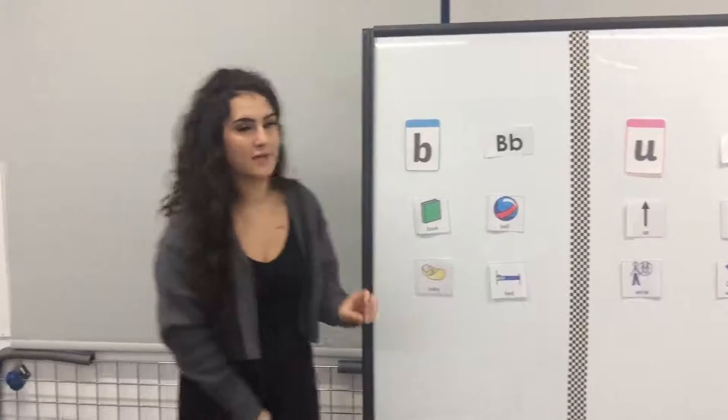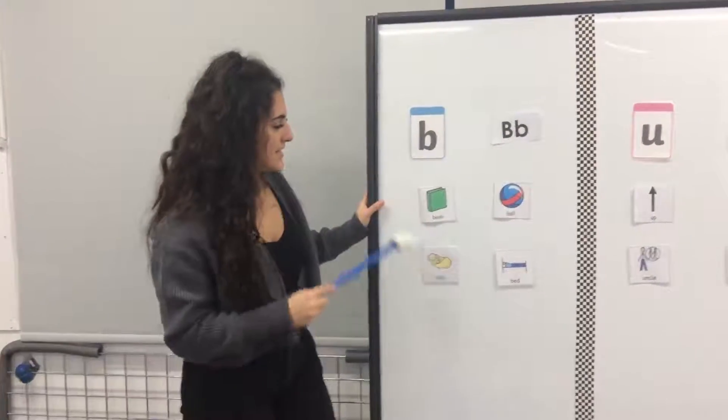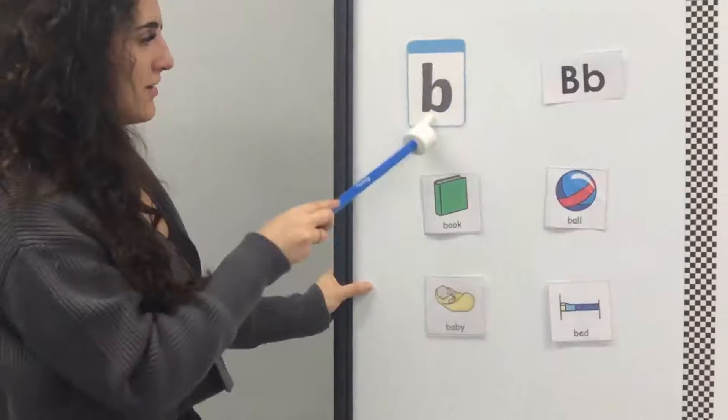So remember the sign for B is B, B. Okay, let's have a special word that begins with the letter B.